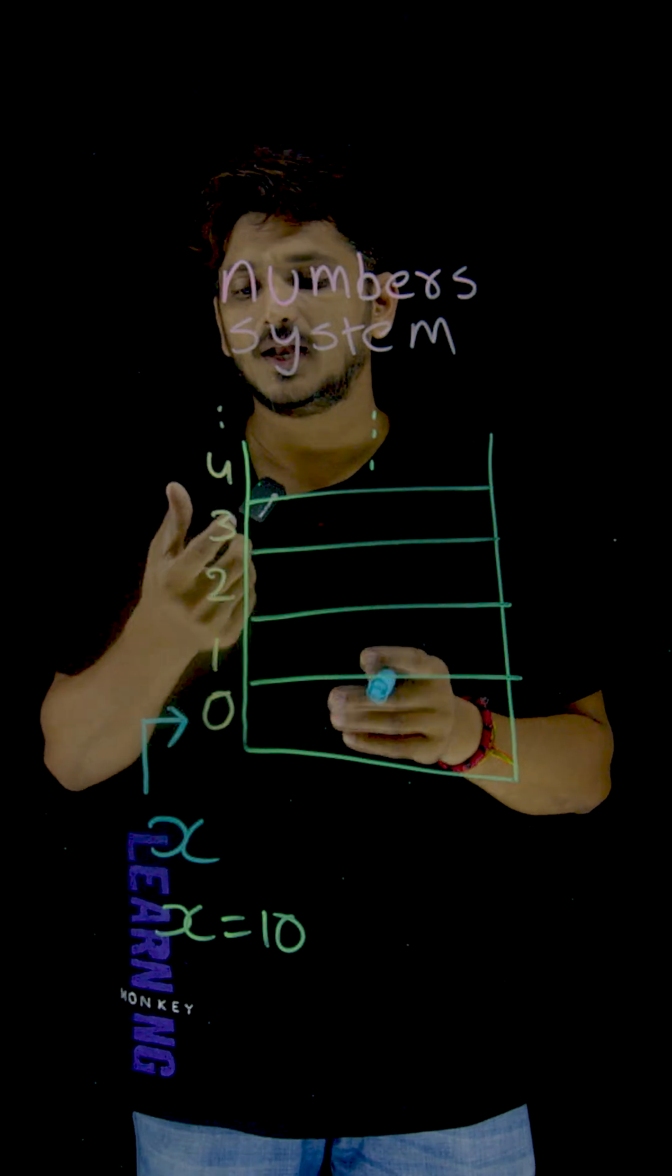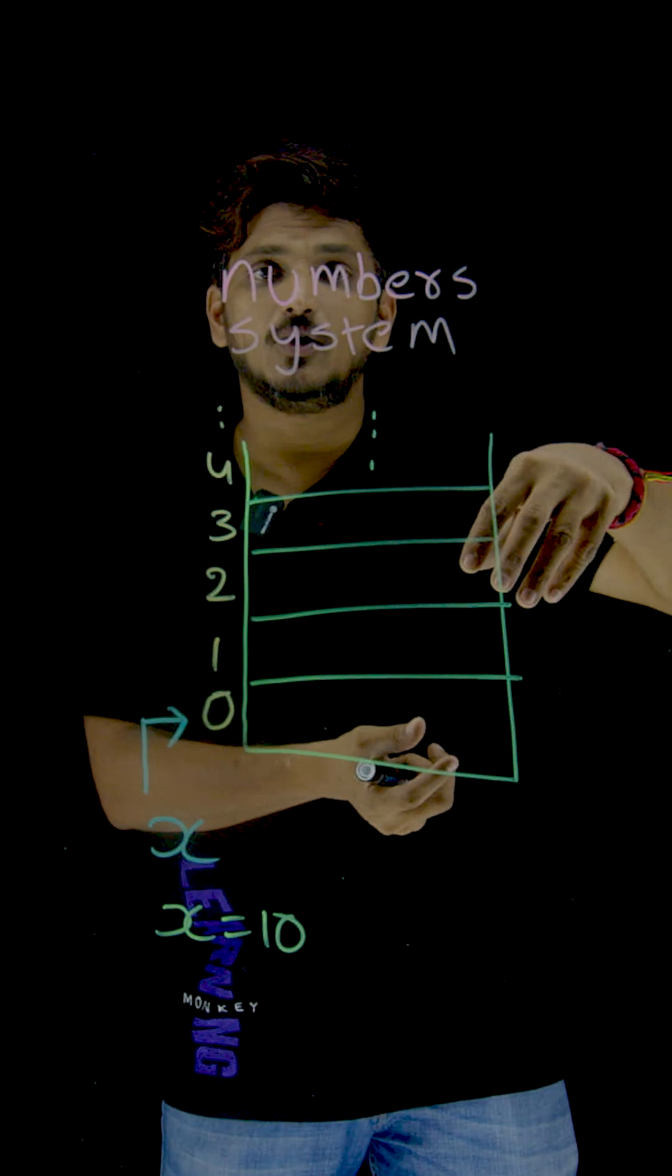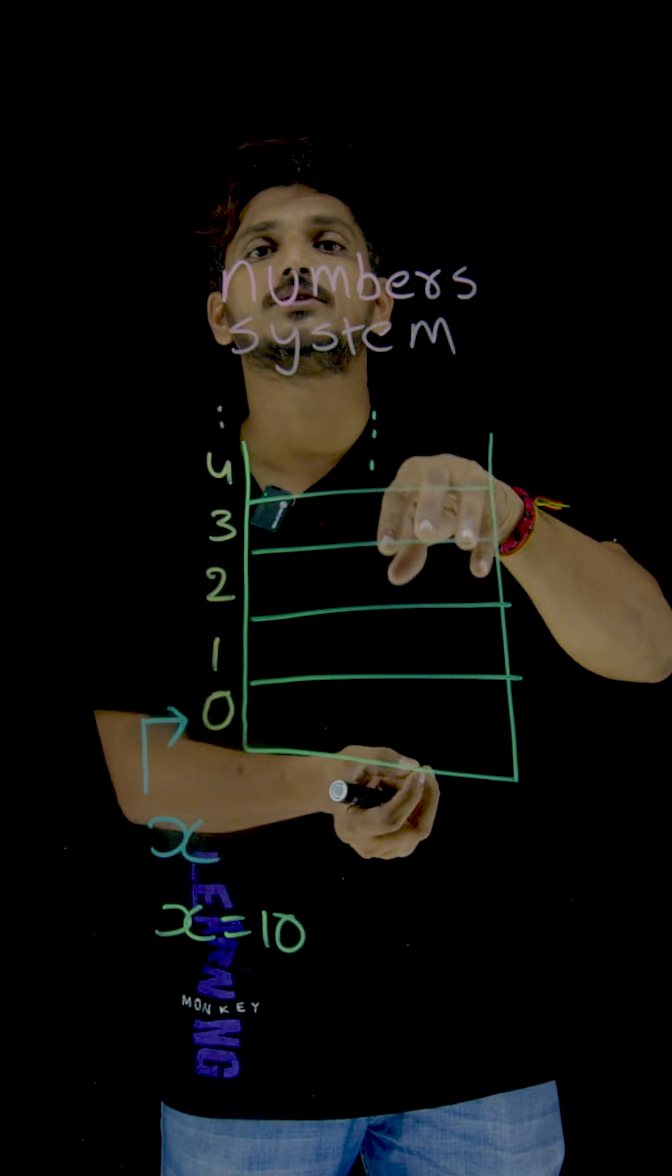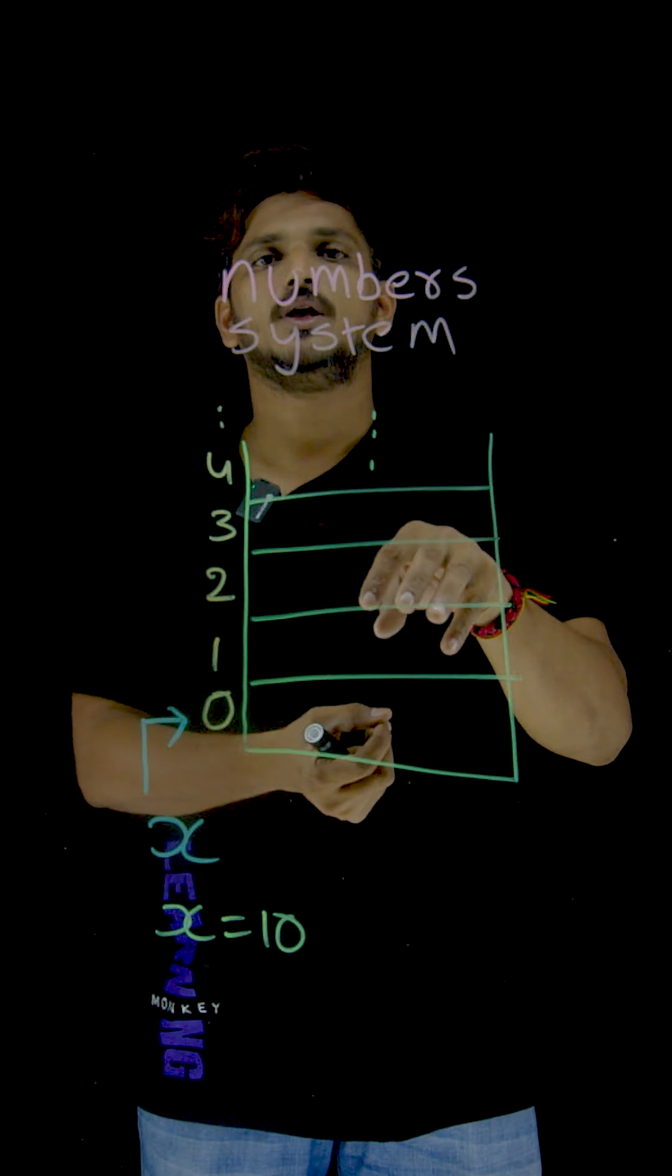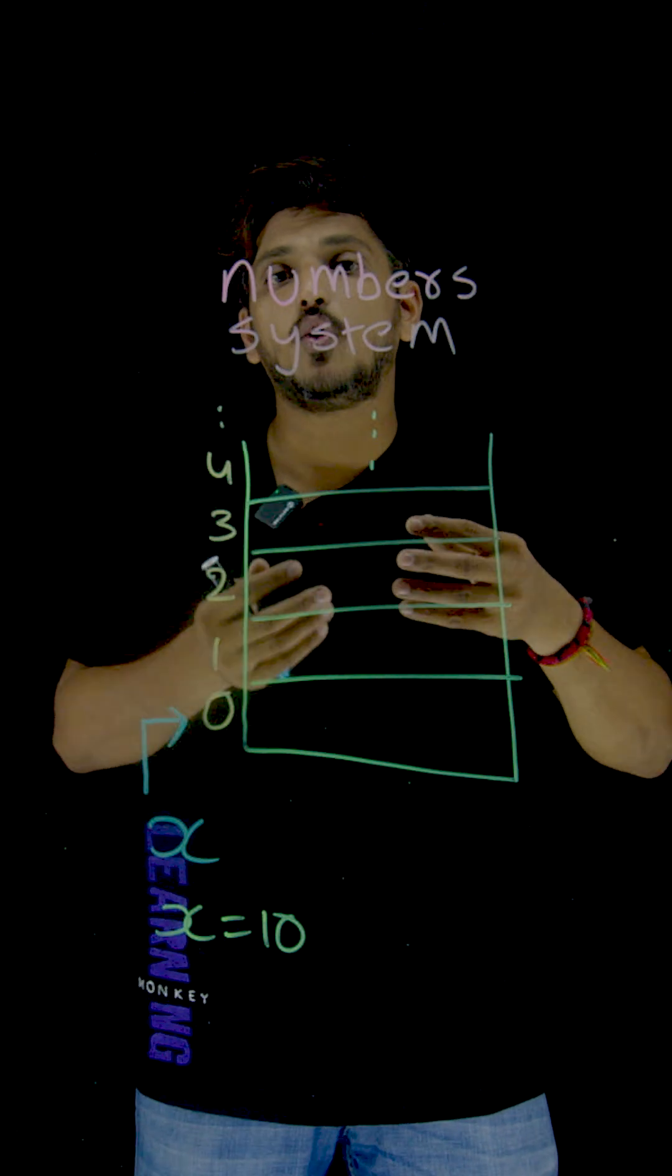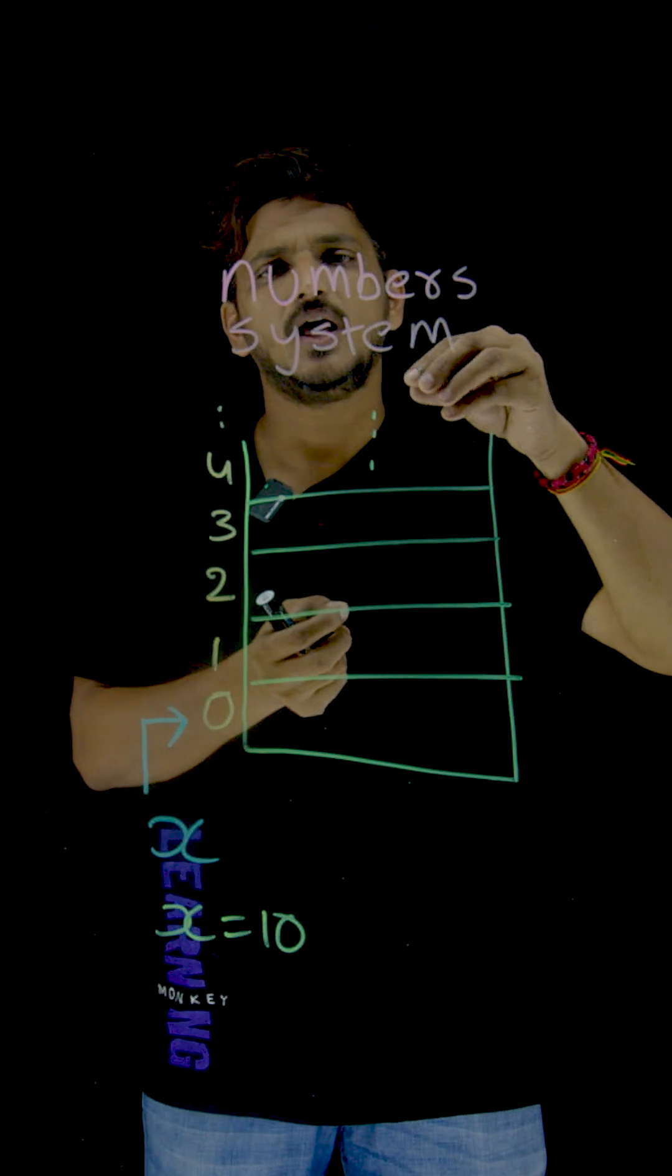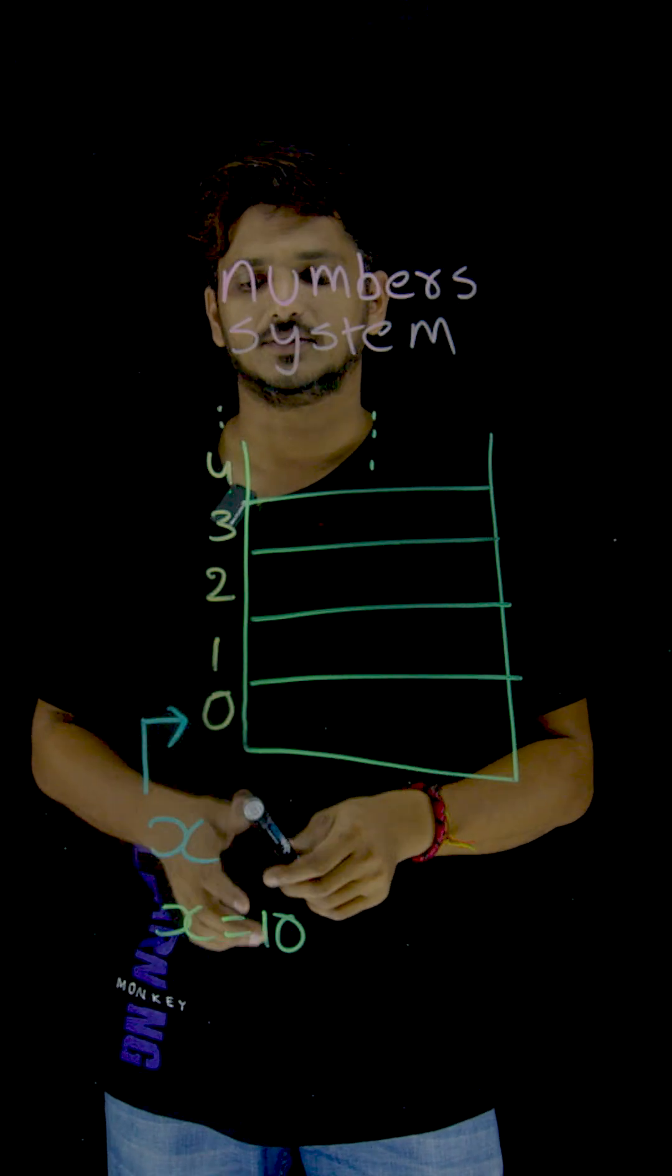So variable is holding a memory location. In that memory location, we are going to store some value. Suppose, in a programming language, if you want to hold some value in that memory location, what you have to do in the programming language?